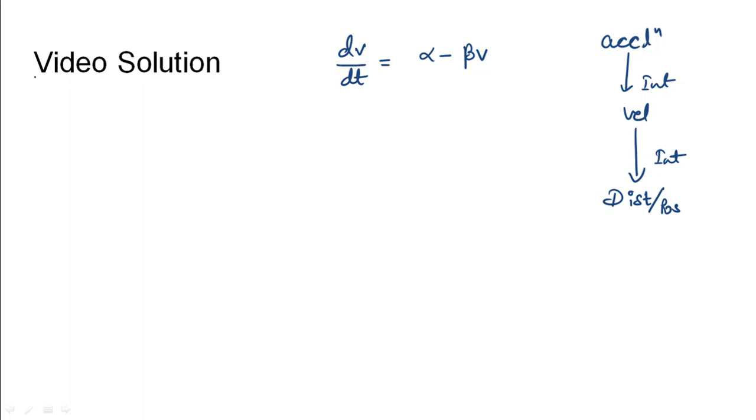Firstly we will integrate this expression. We will use separable variable technique and bring all the variables of similar nature on one side. We will bring the alpha minus beta v in denominator and take time on the other side. We will integrate this. This would give us ln of alpha minus beta v divided by the coefficient of v, that is minus of beta equals t plus c.